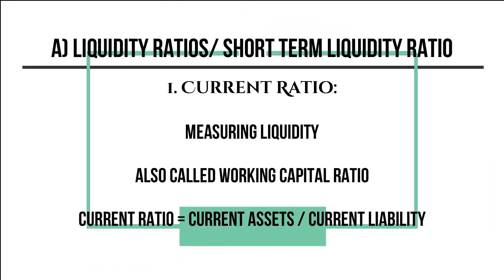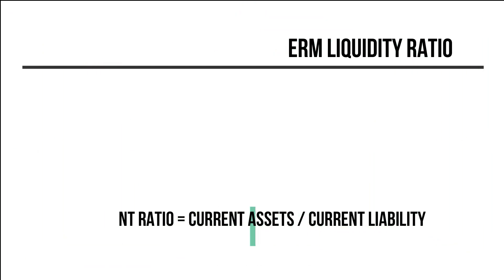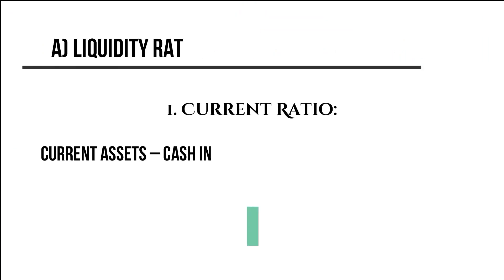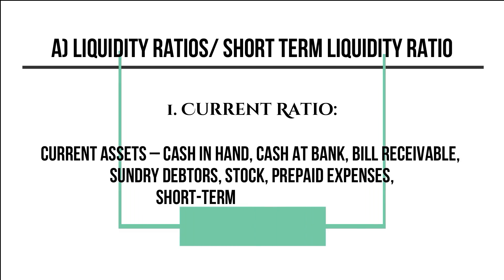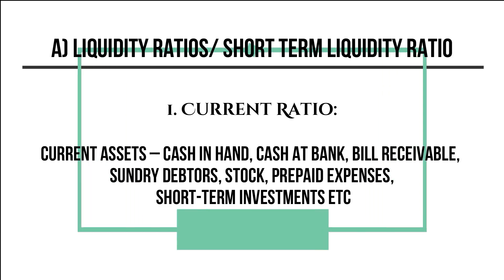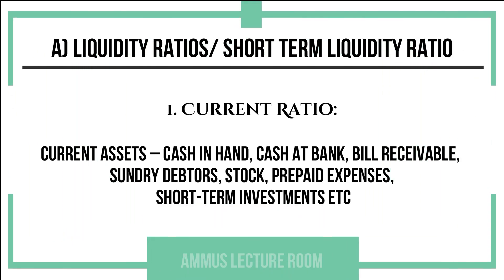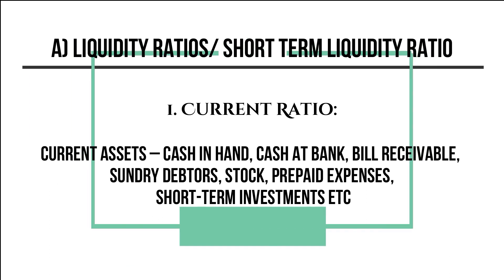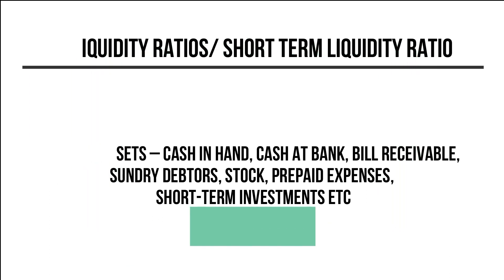The current ratio equation is: current assets divided by current liabilities. Current assets include cash in hand, cash at bank, bills receivable, sundry debtors, stock, prepaid expenses, and short-term investments.